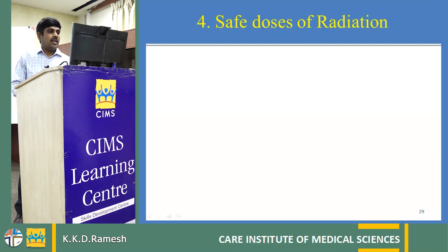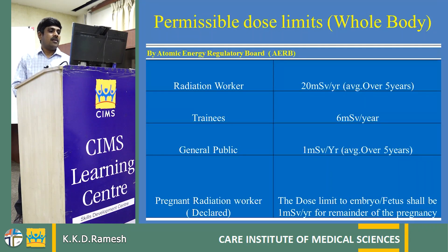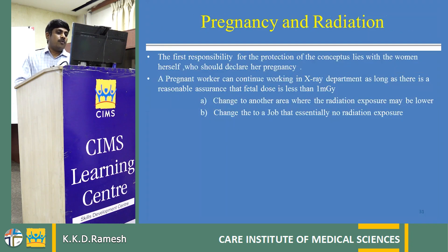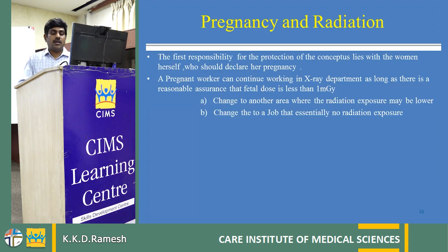Safe dose limits of radiation are provided by AERB. For radiation workers, the dose limit is 20 millisieverts per year averaged over five years. For trainees, the dose limit is 6 millisieverts per year. For the general public, it is 1 millisievert per year. For pregnant radiation workers, the dose limit is 1 millisievert per year, as the embryo or fetus is considered general public. It is the responsibility of the female radiation worker to declare her pregnancy and convey the message to the HOD and the local Radiation Safety Committee.